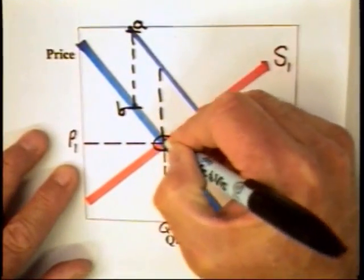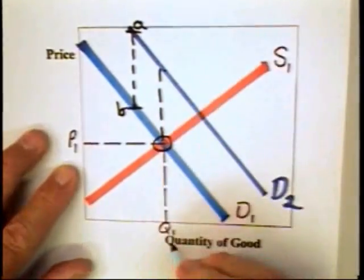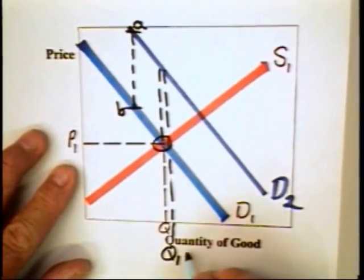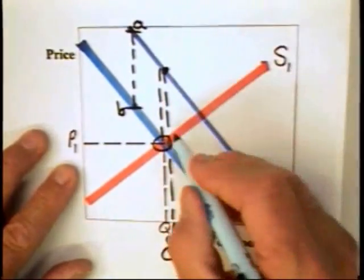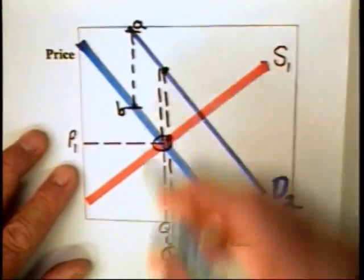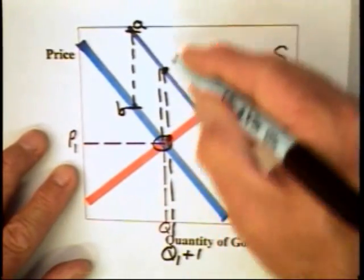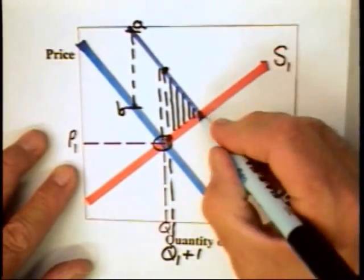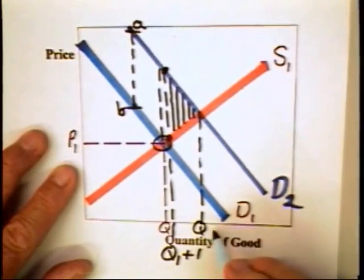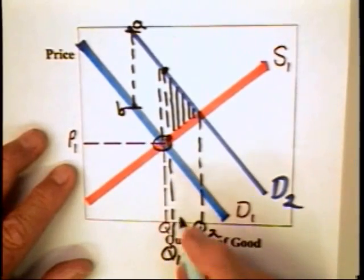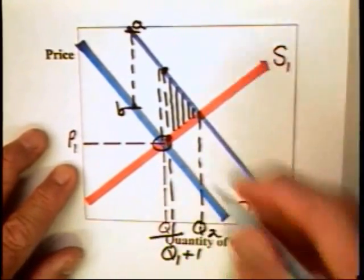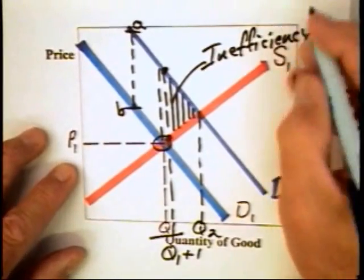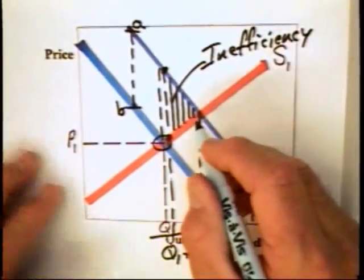But notice that in this case, the additional value of the Q1 plus 1 unit is really there, and the additional cost of producing that unit is there — we're missing out on additional value. The same is true for each additional unit all the way up to Q2. So the market should in fact be producing Q2, whereas in fact it is producing Q1. And there is an inefficiency in the market equal to this triangular striped area.